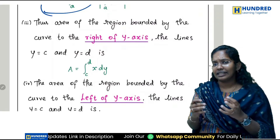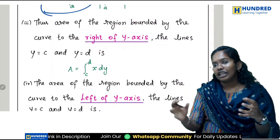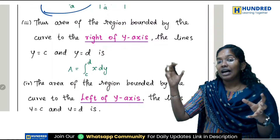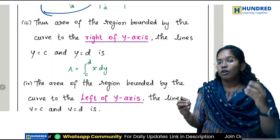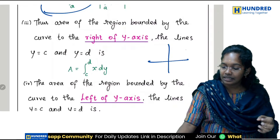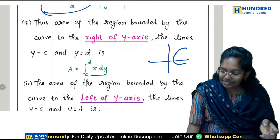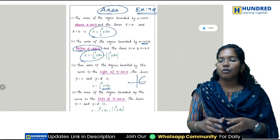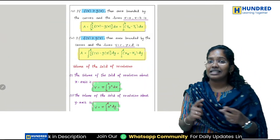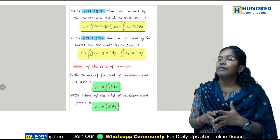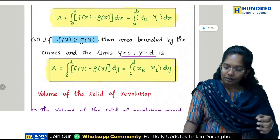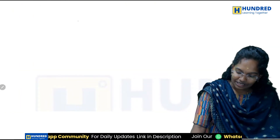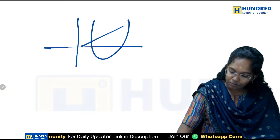Now I have to find the area — find the formula for the curve. There are two equations given. I have to find and plot the graph to determine whether it is above or below the x-axis. If the curve is above the x-axis, use area = integral y dx. If it is below, use minus. If the curve is to the right side of the y-axis, the formula is x dy. If it is to the left side, it is minus x dy.